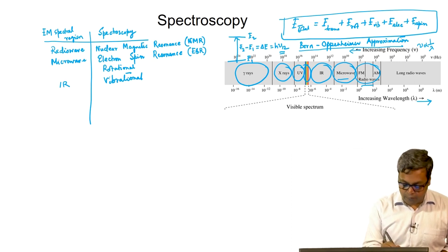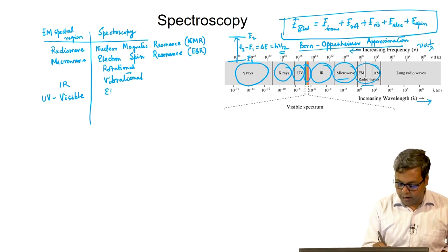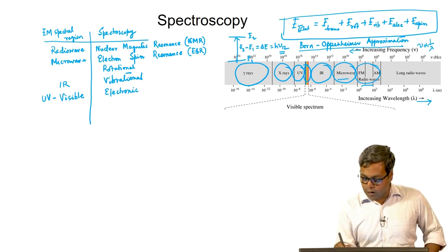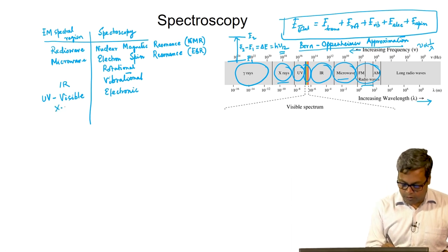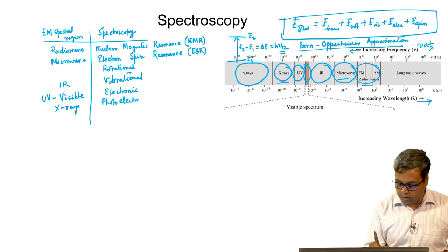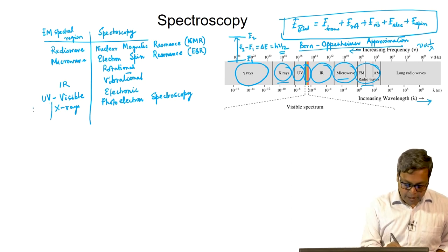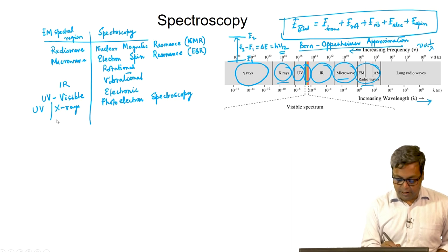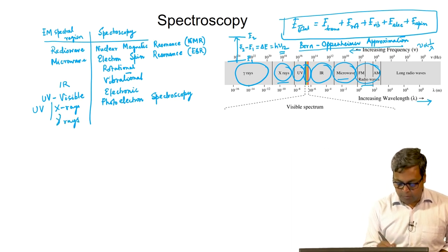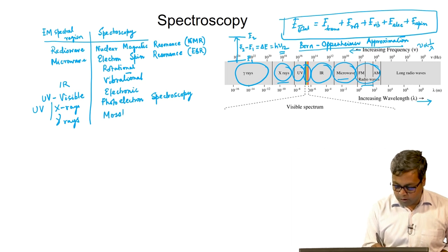In the visible and ultraviolet region combined, we have electronic spectroscopy. In the X-ray region, we have photoelectron spectroscopy. We can also have photoelectron spectroscopy using high-energy UV light. Finally, for gamma rays, we have Mossbauer spectroscopy.